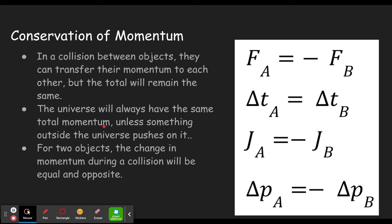For two objects, the change in momentum during a collision will be equal and opposite. When two things hit, Newton's third law tells us that the force on one will be equal and opposite to the force on the other. What's really pushing is the molecules in one are so close to the molecules in the other that there's an electrostatic repulsion between them. Pretty much every contact force on Earth is because of electrostatic repulsion of atoms in contact between the two surfaces, which makes it easier to remember that the force on one is equal and opposite to the force on the other.